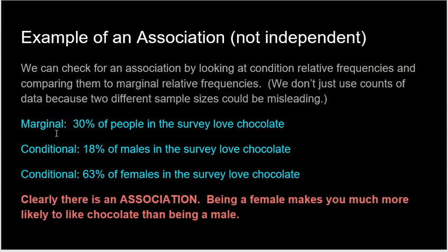We can check for an association by looking at conditional relative frequencies — that's why I spent so much time on them. Also, don't use counts because they can be misleading if your two groups have different sample sizes. Use proportions to determine if there is an association.